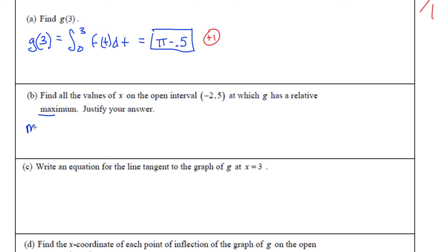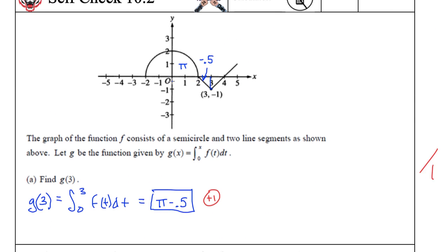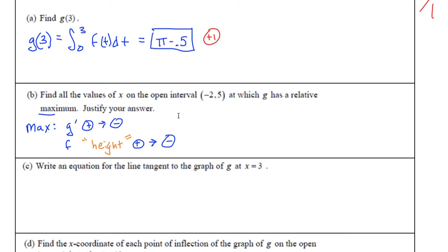Find all the values where we have a relative max. Alright, so definition of a relative max. What goes from positive to a negative? Yeah, so g, g' goes from a positive to a negative. And therefore, what is g'? g' is? Is f, or height. Yeah. So where does height go from a positive to a negative? Goes from a positive to a negative. Positive to a negative right there and no one, nowhere else. So just at 2.